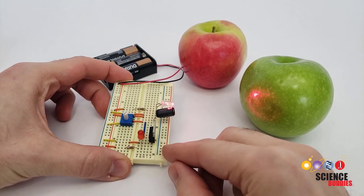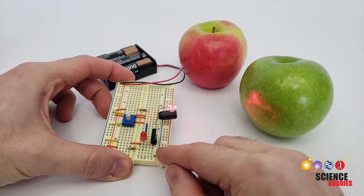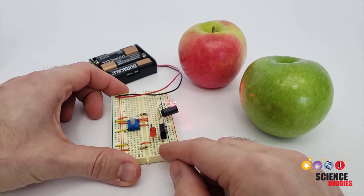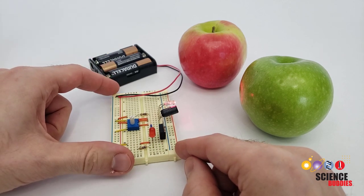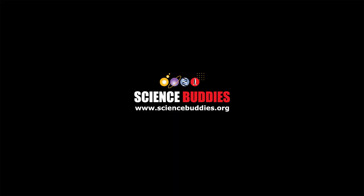Remember, for written instructions to build this circuit, including a complete parts list, circuit diagram, and more detailed explanation of how exactly the circuit works, check out the link to the written instructions in the description of this video. For a library of over 1,200 other fun hands-on science projects and to find one that matches your personal interests, visit us online at www.sciencebuddies.org.